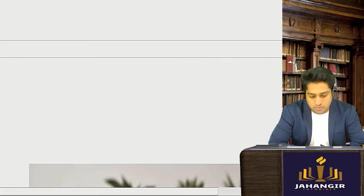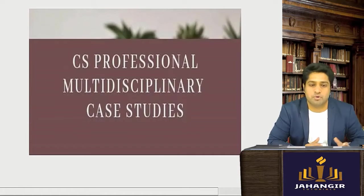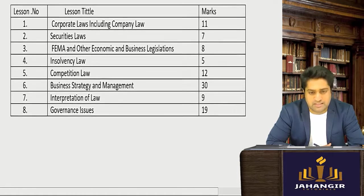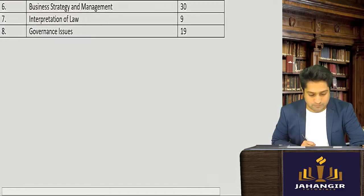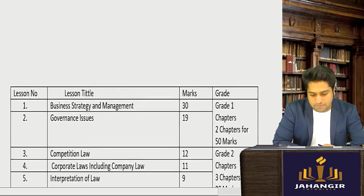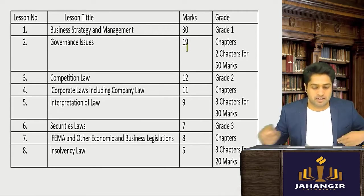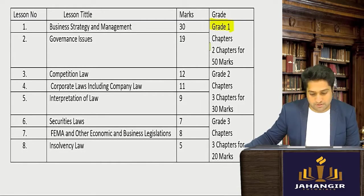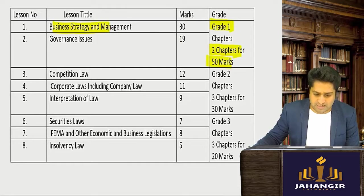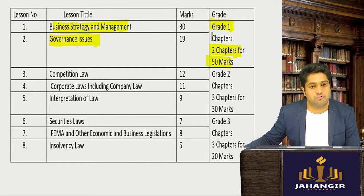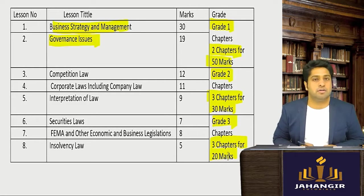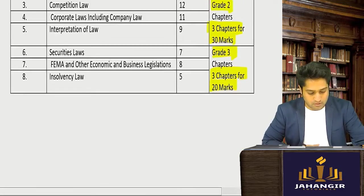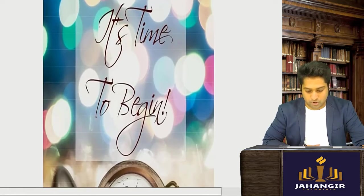All the closed book subjects are now covered. For the open book exam — multidisciplinary case studies — this also needs to be strategically studied. Grade one chapters are 2 chapters for 50 marks: business strategy and management, and governance issues. Grade two is 3 chapters for 30 marks, and grade three is 3 chapters for 20 marks. For the optional paper, it depends on which one you have taken, so that is not covered here.